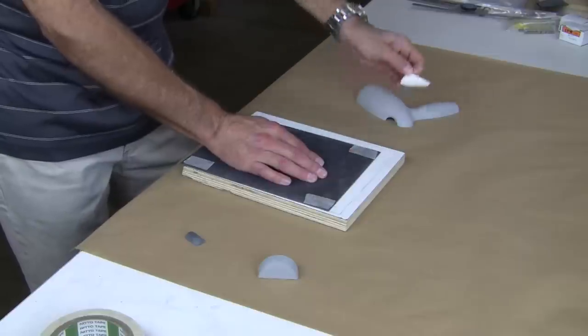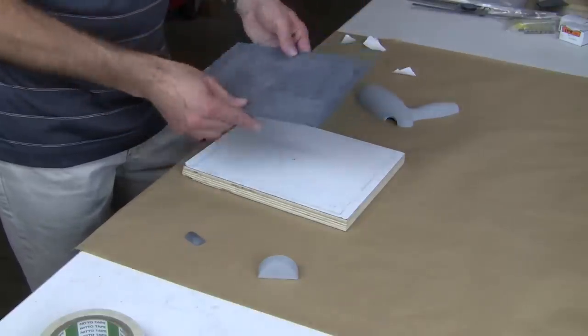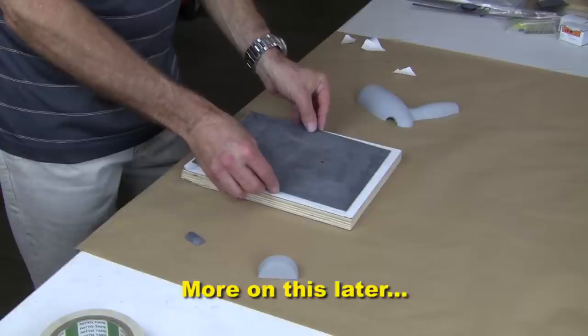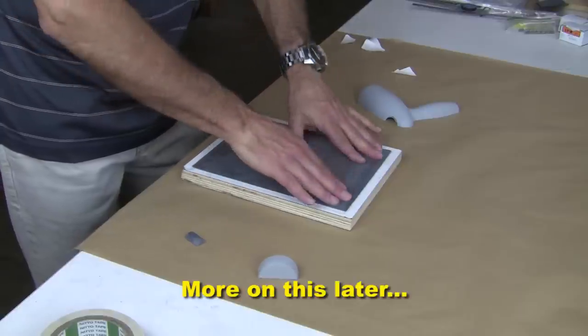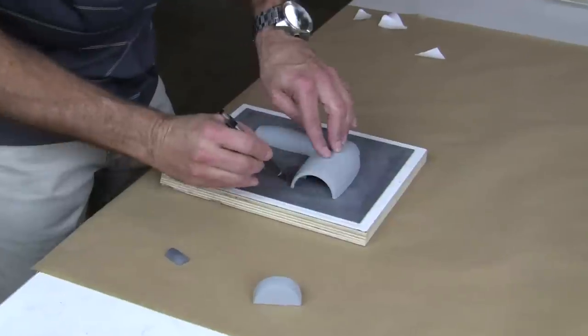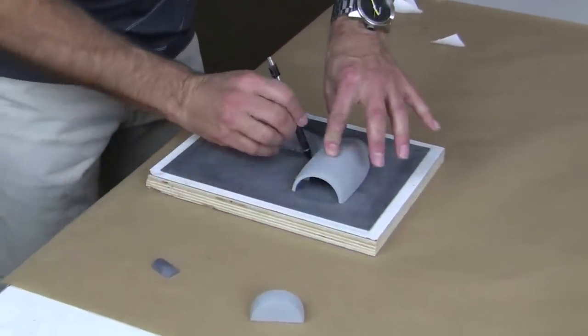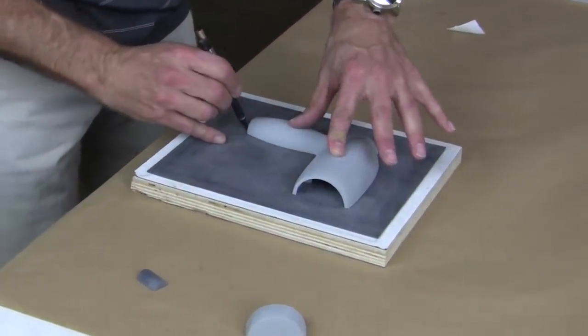We double side tape the PVC sheet down to the stiffer base. Note that using this thin sheet of PVC makes removal of the splitter board easier later in the process. Next, we trace our pattern onto the PVC sheet for easier centering later.